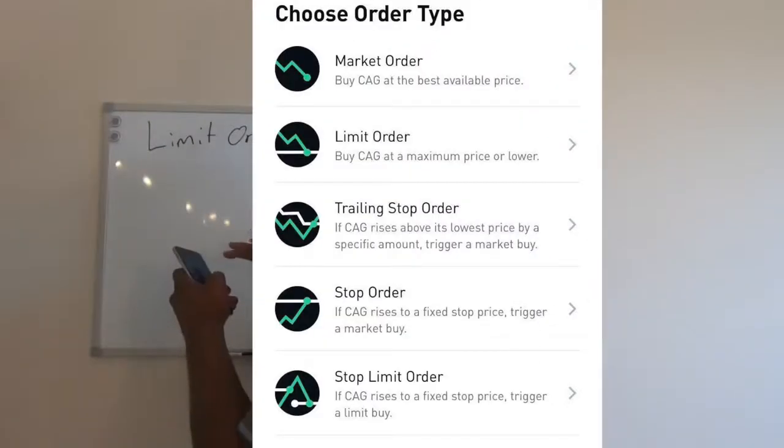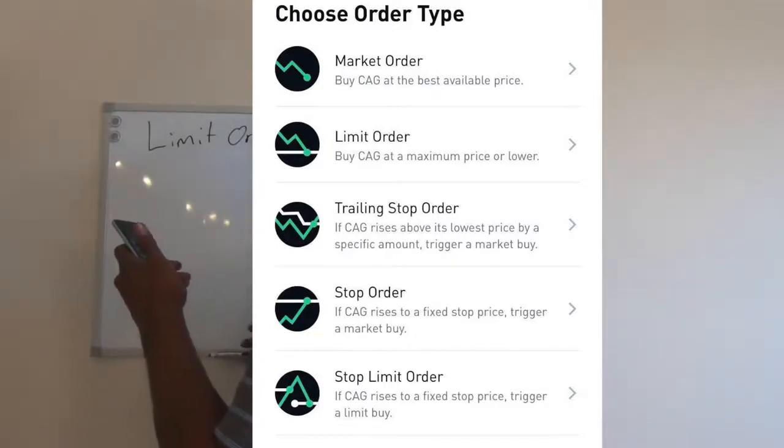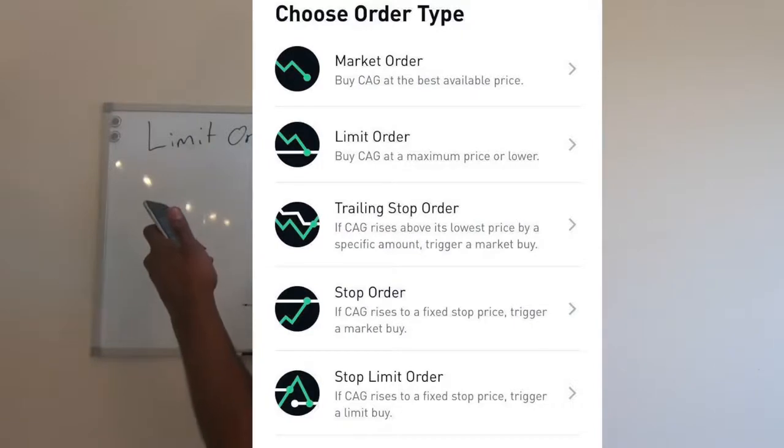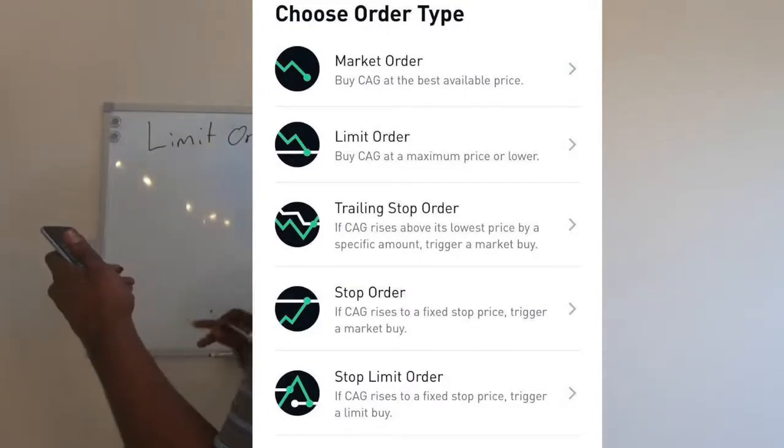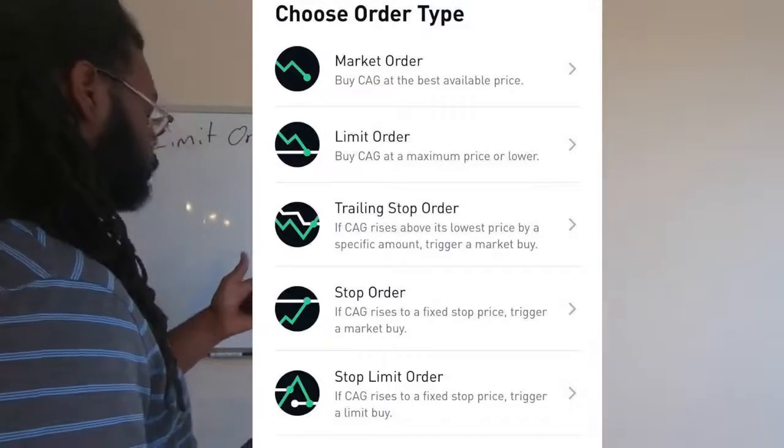And you'll see where it has Limit Order options as well as the Stop Order options. A regular market order is just a basic order. A trailing stop order is still going to be a stop order, just based off of a percentage of the current stock's value. I'm not really going to get into that. And the stop limit order is a little bit more complex, so I'm not going to get into that for this video either.